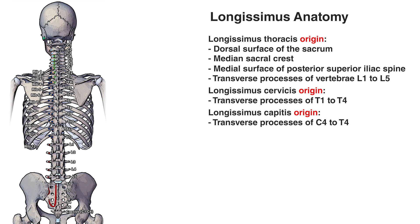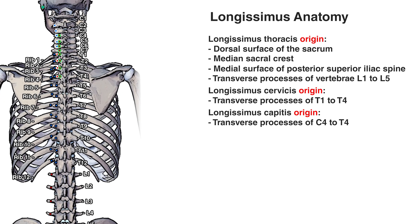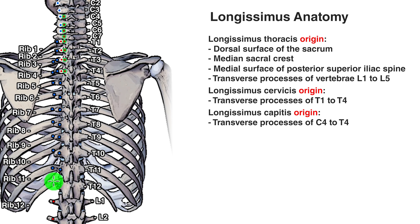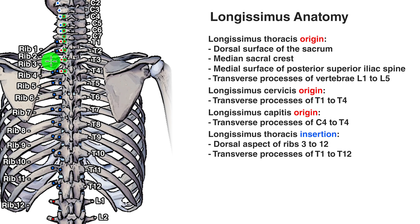The longissimus thoracis is inserting onto ribs 12 through to rib 3, connecting onto all of these ribs. In addition to the ribs, it's also inserting onto the transverse processes of all the thoracic vertebrae — T1 all the way down to T12.